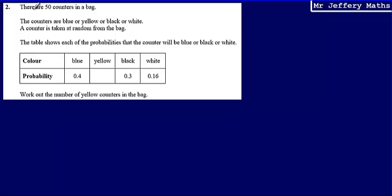This is question two. Here we're told that there are 50 counters in a bag. The counters are blue or yellow or black or white. A counter is taken at random from the bag. The table shows each of the probabilities that the counter will be blue or black or white. So we can see that yellow is missing. Then we're asked to work out the number of yellow counters in the bag.